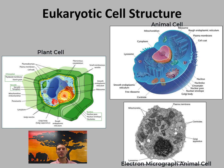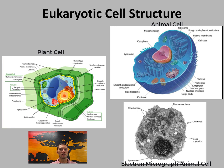Another organelle essential to eukaryotes is the mitochondria. It is a double membrane organelle that conducts aerobic respiration to produce cellular energy, ATP. It also carries out many of its own functions, including having its own DNA and the ability to produce ribosomes and proteins.